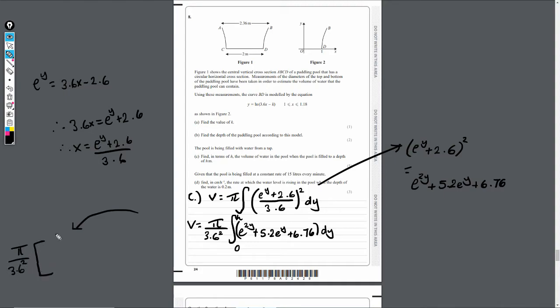In the bracket now, I'm going to get e^(2y) divided by 2, because we're integrating e^(2y) over 2 plus 5.2e^y. So it's going to be plus 6.76 times... sorry, 6.76y.